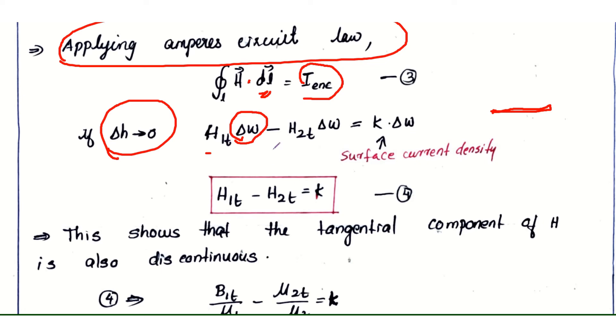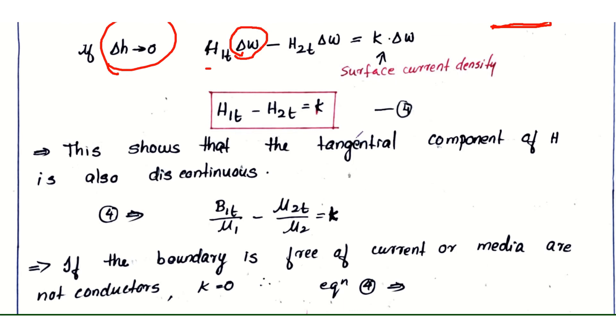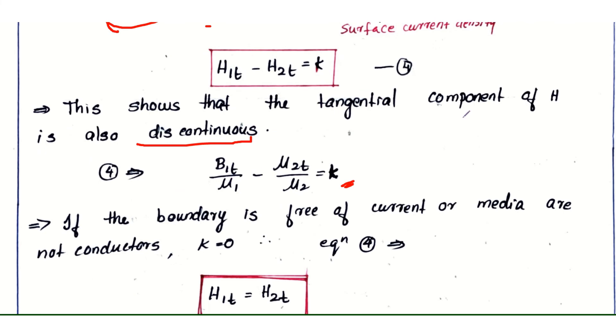Therefore H₁ₜ - H₂ₜ = k. This shows that the tangential component of H is discontinuous if k ≠ 0. Since H = B/μ, or B = μH, this is equation 4.